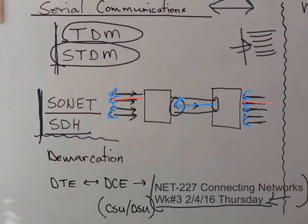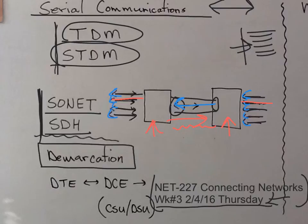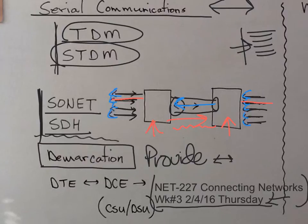In between, that could be the ocean — this can be San Francisco and this could be Japan. We take those signals and send them all over high-speed fiber over long distances. We reviewed demarcation: that point where the provider equipment connects to the customer premises equipment — what the customer owns versus what the provider owns.